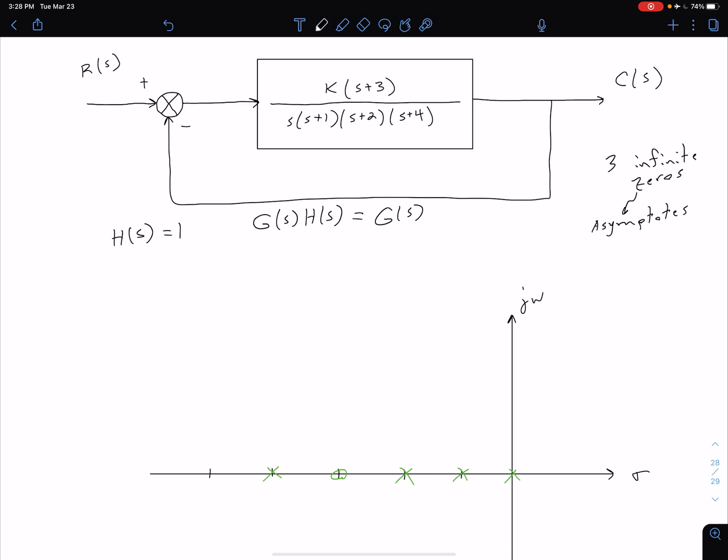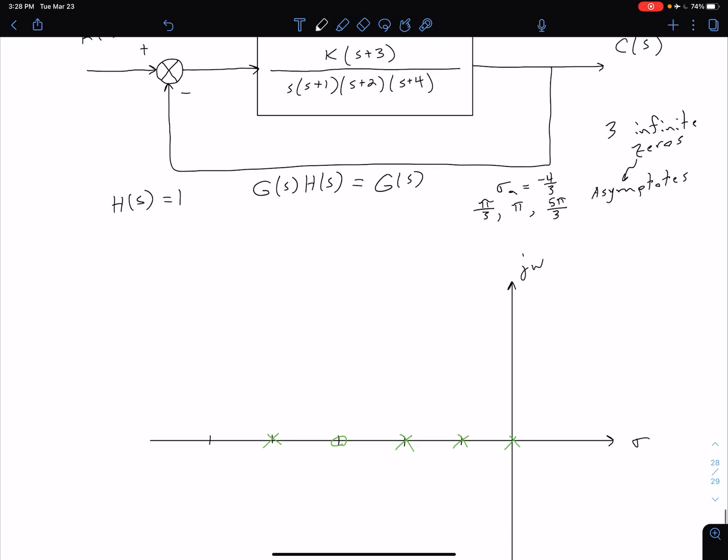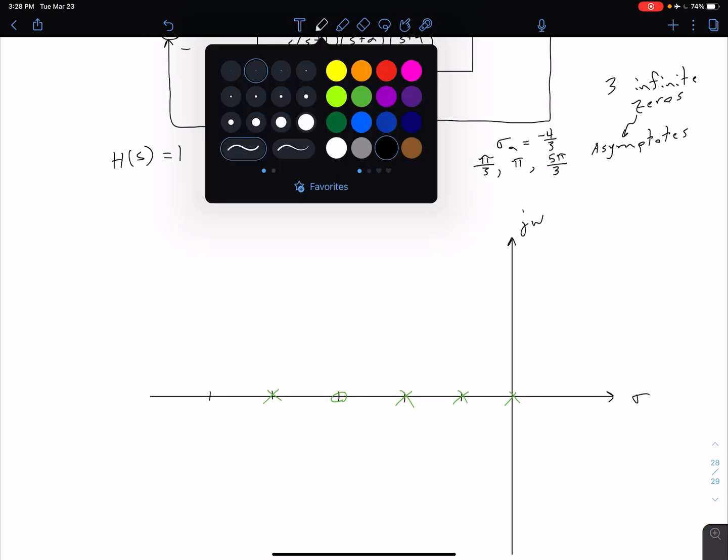I'm not going to go through the details of doing that, but I'll leave it to you all to verify that for our asymptotes, we have a real axis of sigma_a, which is equal to negative four thirds. And then because we have three of them, our angles are going to be the same as in an example we saw previously. We're going to have them at angles of pi thirds, pi, and five pi thirds. So essentially just equal spacing around that 360 degrees. Let's go ahead and add that information down here.